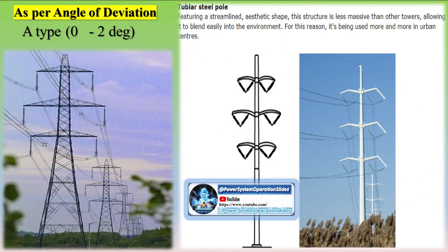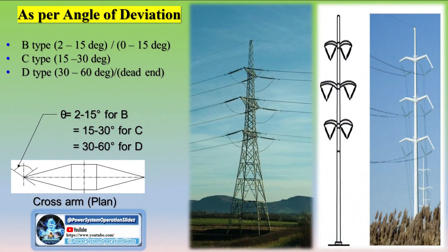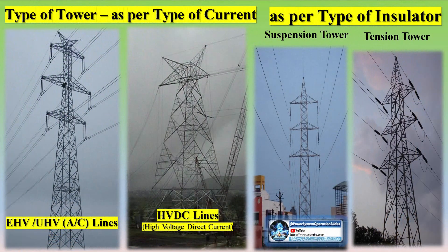The peak of a transmission tower is the portion above the top cross arm; generally, the earth shield wire is connected to the tip of this peak. The cross arm holds the transmission conductor, and its dimensions depend on the level of transmission voltage, configuration, and minimum forming angle for stress distribution. The boom is a rectangular beam of cross section in a horizontal configuration tower, used to support transmission conductors. The cage is the portion between the tower body and the peak, and holds the cross arms. The transmission tower body is the portion from the bottom cross arm up to the ground level, playing a vital role in maintaining the required ground clearance of the bottom conductor.